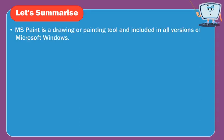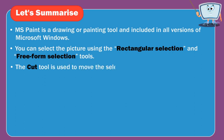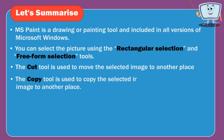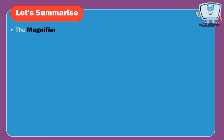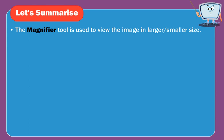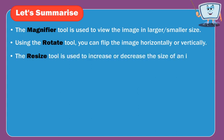Let's summarize. MS Paint is a drawing or painting tool included in all versions of Microsoft Windows. You can select a picture using the rectangular selection and free-form selection tools. The cut tool moves the selected image; the copy tool copies it. The color picker tool selects a color from the drawing. The undo command removes the result of the previous action. The magnifier tool views the image in larger or smaller size. Using the rotate tool, you can flip the image horizontally or vertically. The resize tool is used to increase or decrease the size of the image.